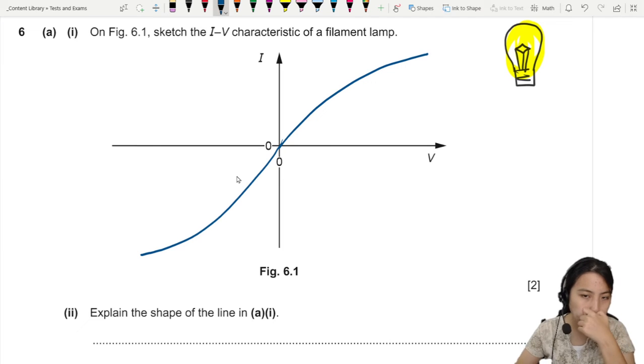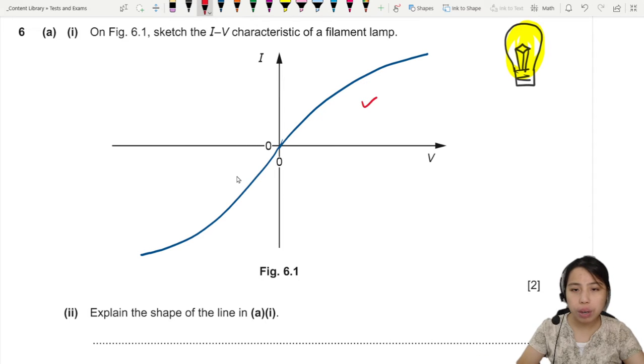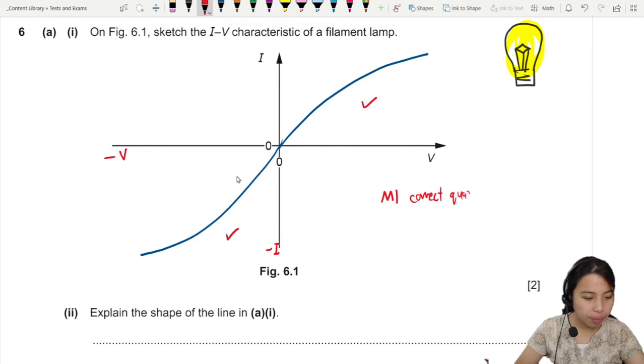Should be symmetrical. So whatever graph you draw, some key notes is that firstly it should be in the positive quadrant and the negative negative quadrant. Negative V, negative I. And it should be symmetrical. So first one, correct quadrants. That's your M1 mark. And you must pass through origin.